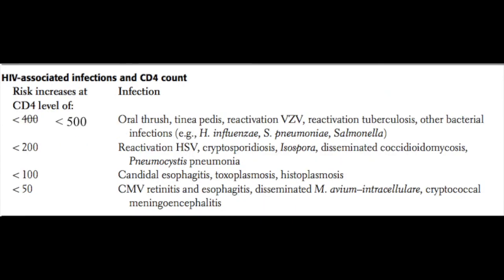Clinicians use CD4 levels in HIV-positive individuals to determine prophylactic therapies based on which opportunistic infections appear at certain CD4 counts. When CD4 drops below 400, there is increased risk of oral thrush, tinea pedis, reactivation of VZV (shingles), reactivation tuberculosis, and other bacterial infections such as H. flu, Strep pneumo, and Salmonella.